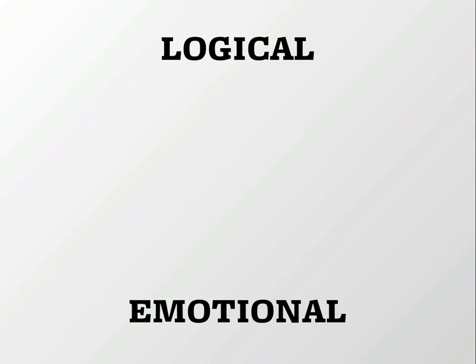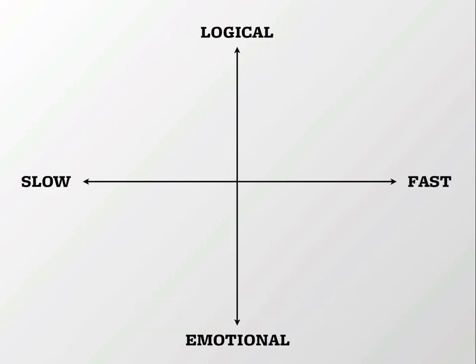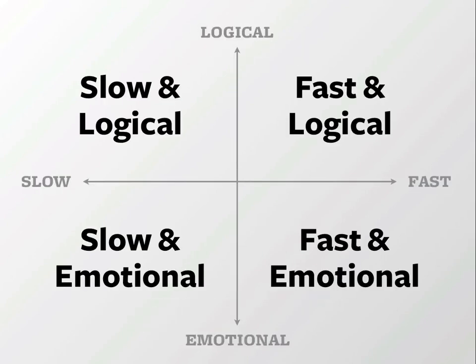An interesting thing happens when you combine these two scales together. You get a pretty clear breakdown of the four different decision modes: slow and logical, fast and logical, slow and emotional, and fast and emotional.